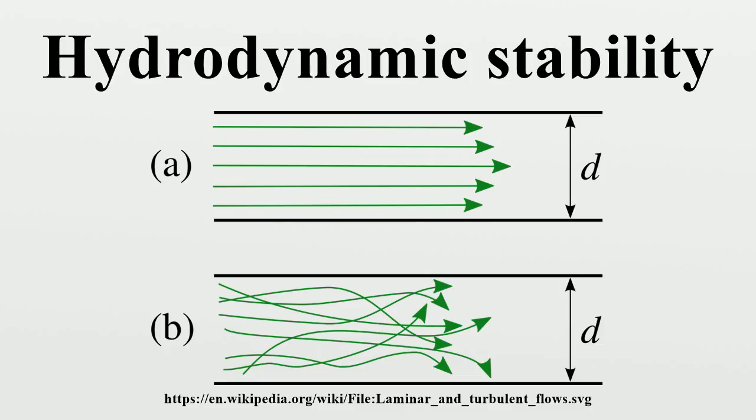In the case of hydrodynamic stability this is a series of differential equations and their solutions. A bifurcation occurs when a small change in the parameters of the system causes a qualitative change in its behavior.